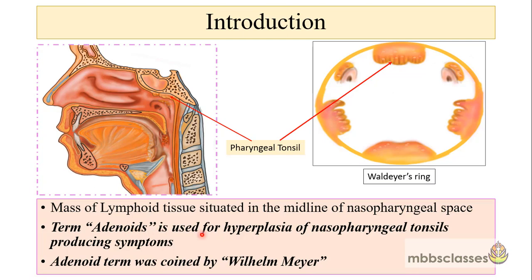The term adenoid is used for the hyperplasia of the nasopharyngeal or pharyngeal tonsils when they produce symptoms. From our anatomy classes, the adenoid is one of the components of the Waldeyer's ring. The components of the Waldeyer's ring are the nasopharyngeal tonsils, tubal tonsils situated in the nasopharynx, the palatine tonsils present bilaterally, and the lingual tonsils situated in the oropharynx. This adenoid term was coined by Wilhelm Mayer.